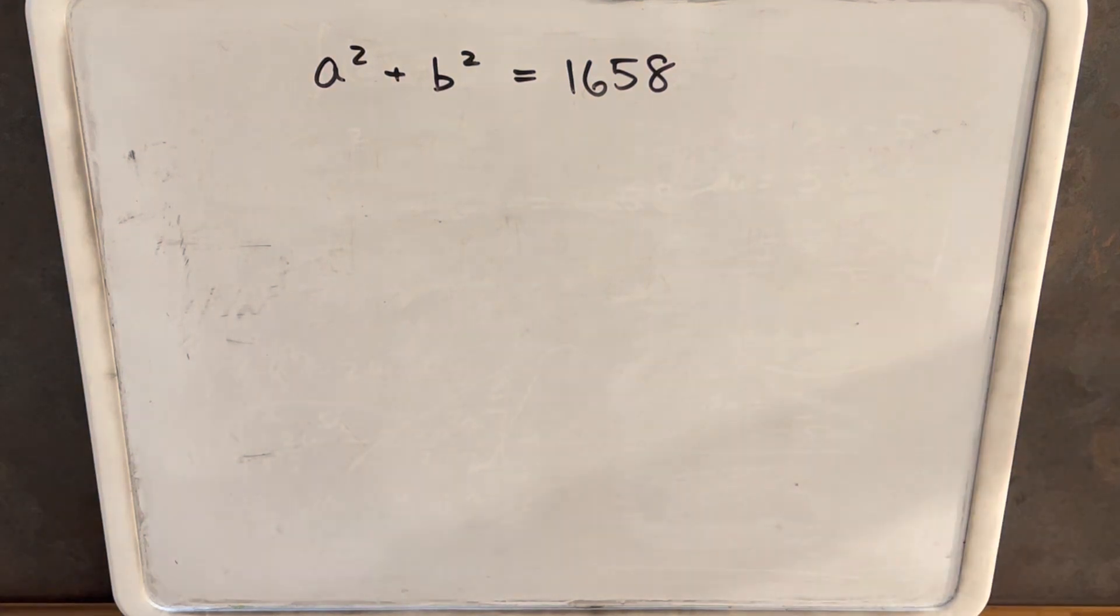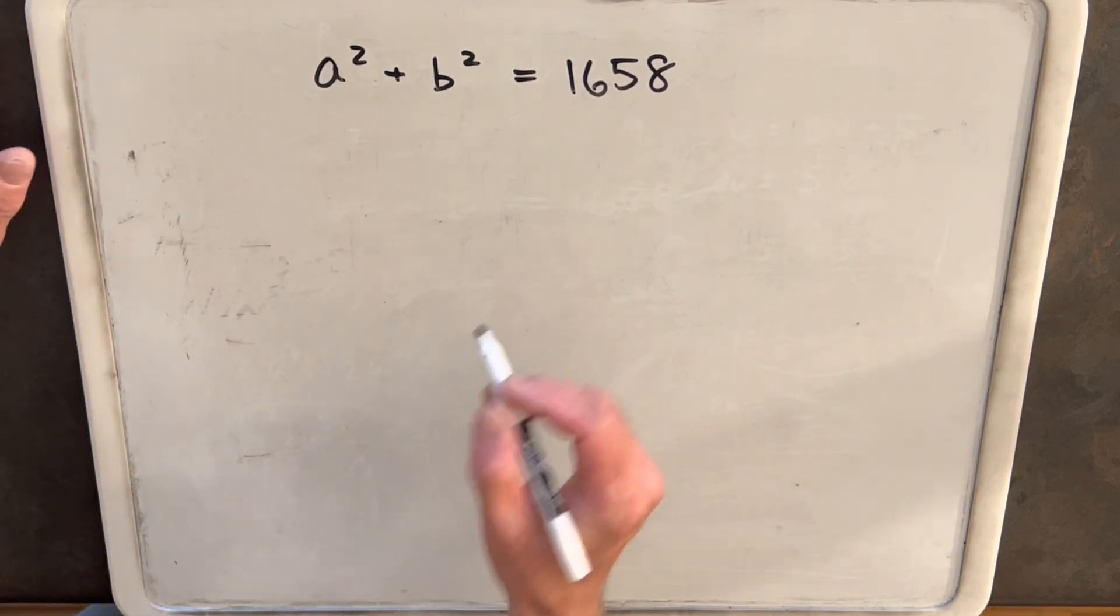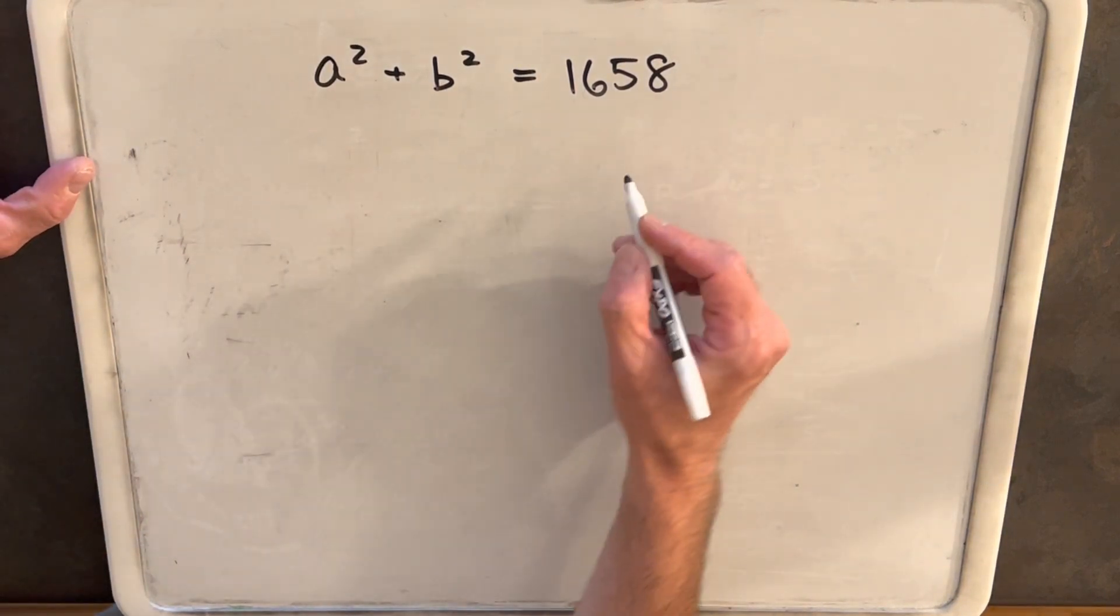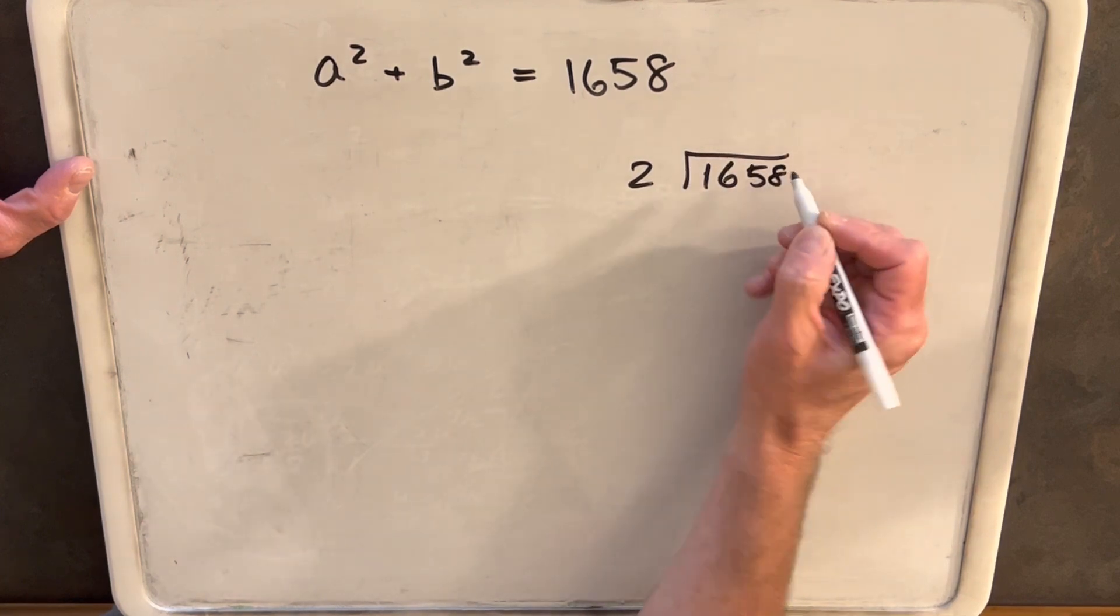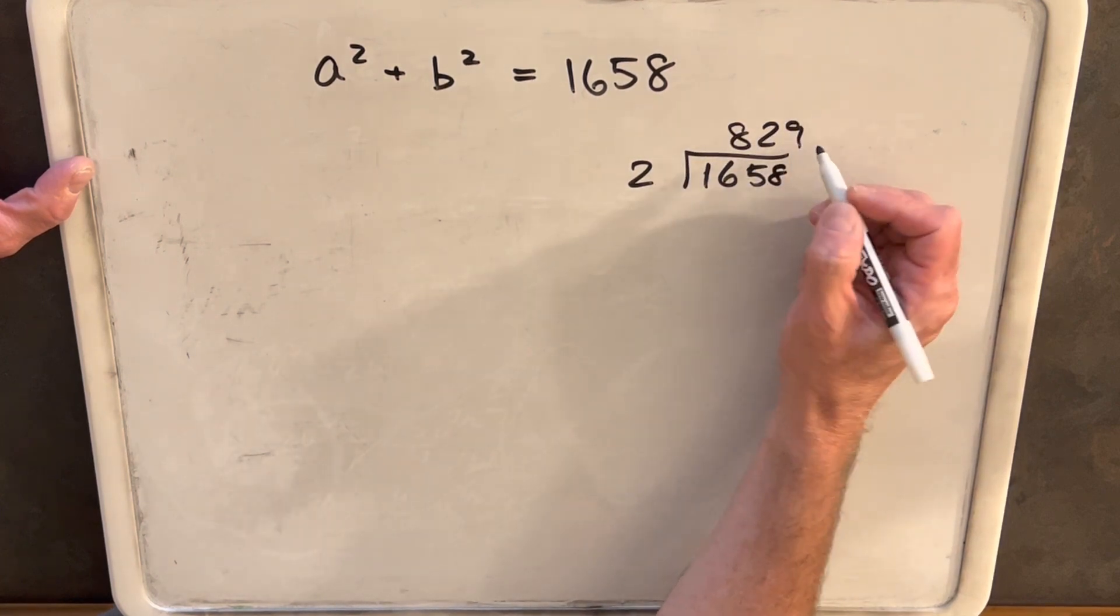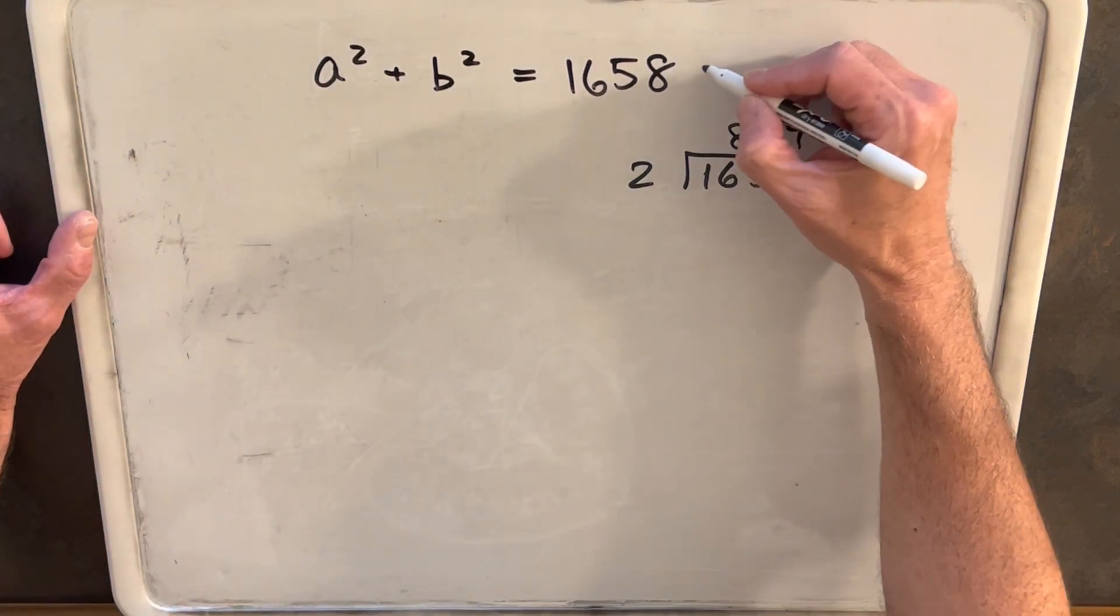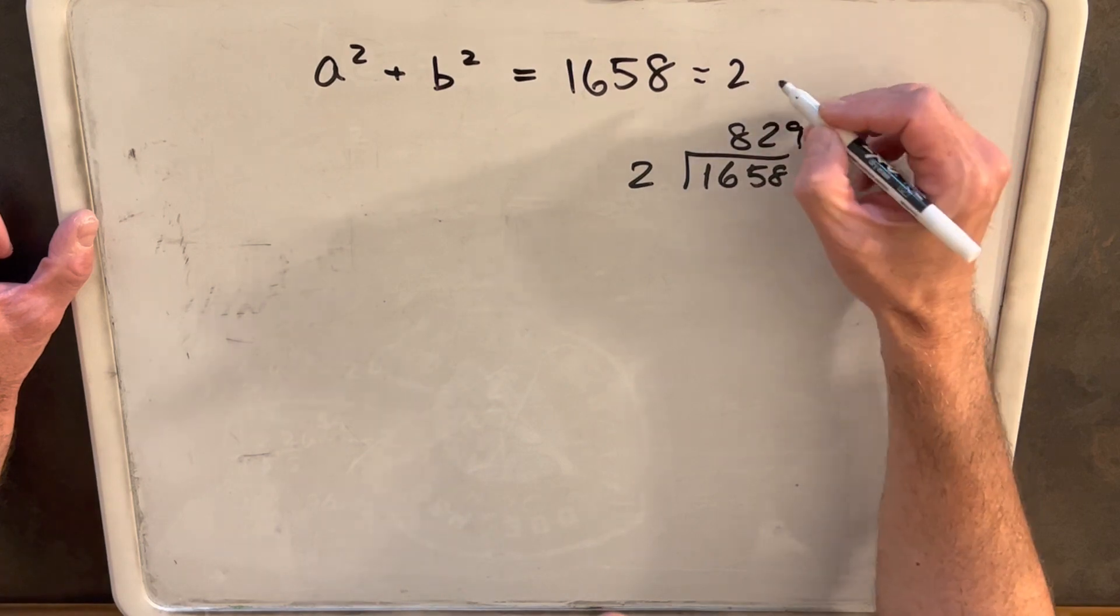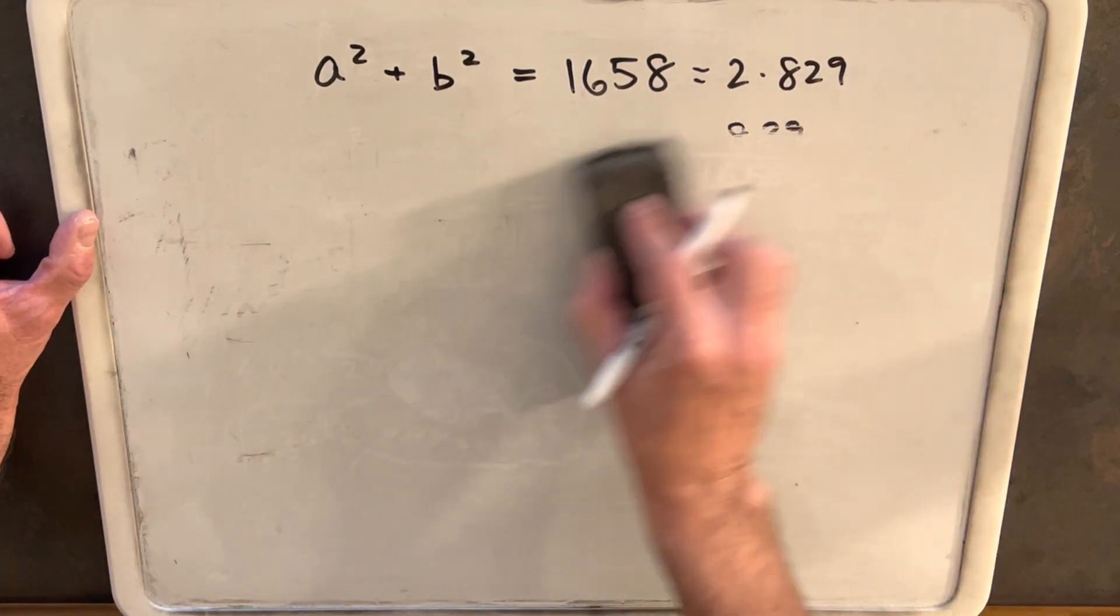The way I usually approach a sum of two squares is with the prime factorization of the number we're trying to find. In this case, it's pretty convenient because the prime factorization is going to be pretty simple. We can find it just by noticing it's even. Dividing by 2, we end up with 829, and it happens that 829 is prime. I'm not going to prove that, but that makes the prime factorization pretty simple.